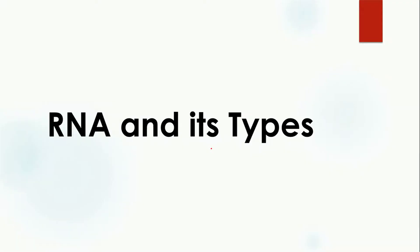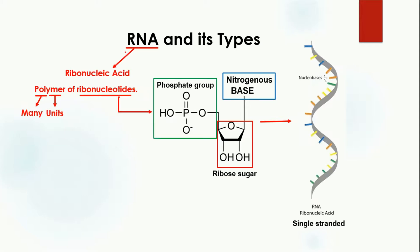Hello nerds, welcome to Ahmed Coaching. I'm your teacher Dr. Anam. Today we are going to study about RNA and its types. The word RNA stands for ribonucleic acid — R for ribo, N for nucleic, and A for acid. RNA is a polymer of ribonucleotides, meaning that many units of ribonucleotides combine together to form RNA.